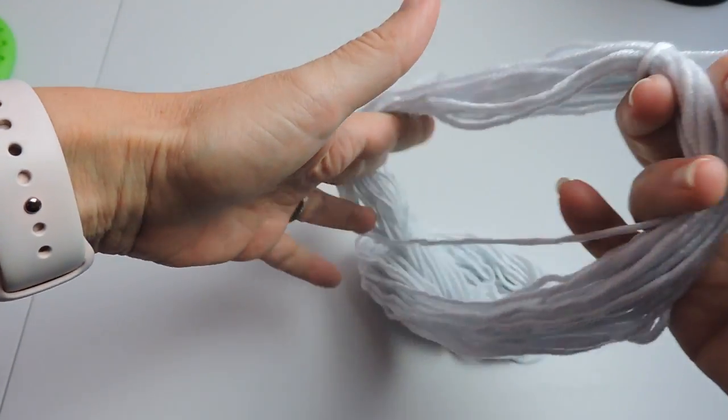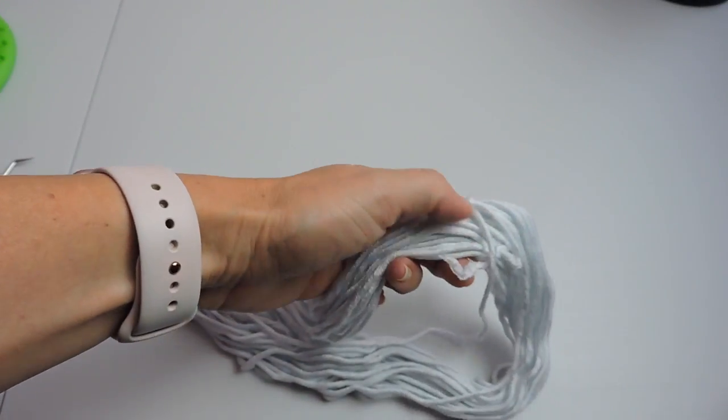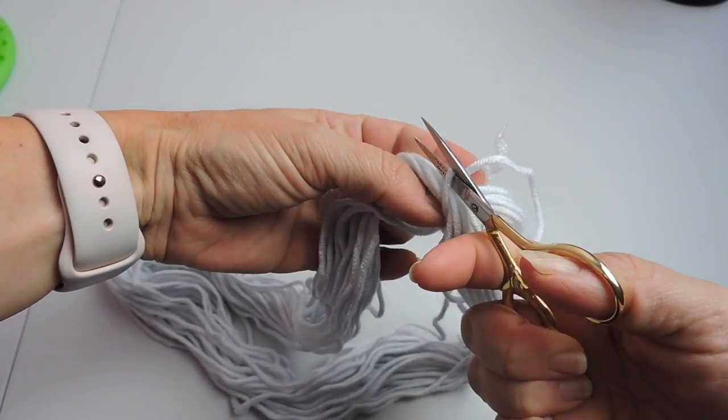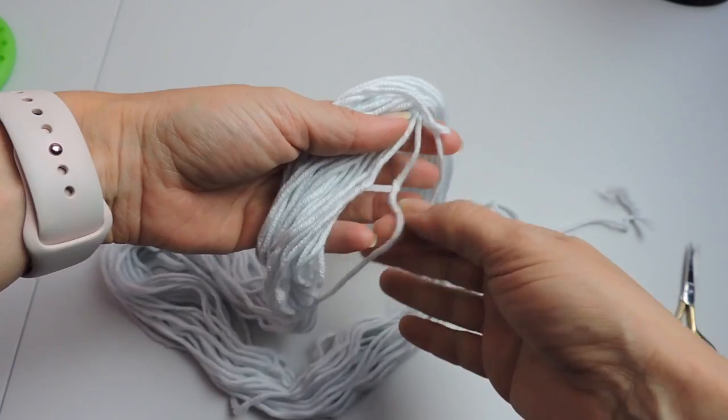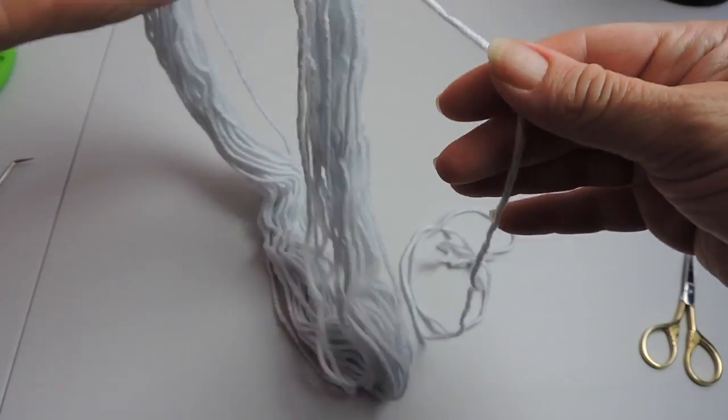So as you can see I'm trying to take apart the yarn. Each little hank is tied with a knot, so you'll want to cut that. Well then that long piece is part of it.